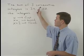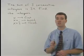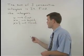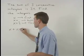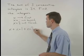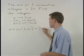Since the sum of our three consecutive integers is 24, our equation will read x plus x plus 1 plus x plus 2 equals 24.